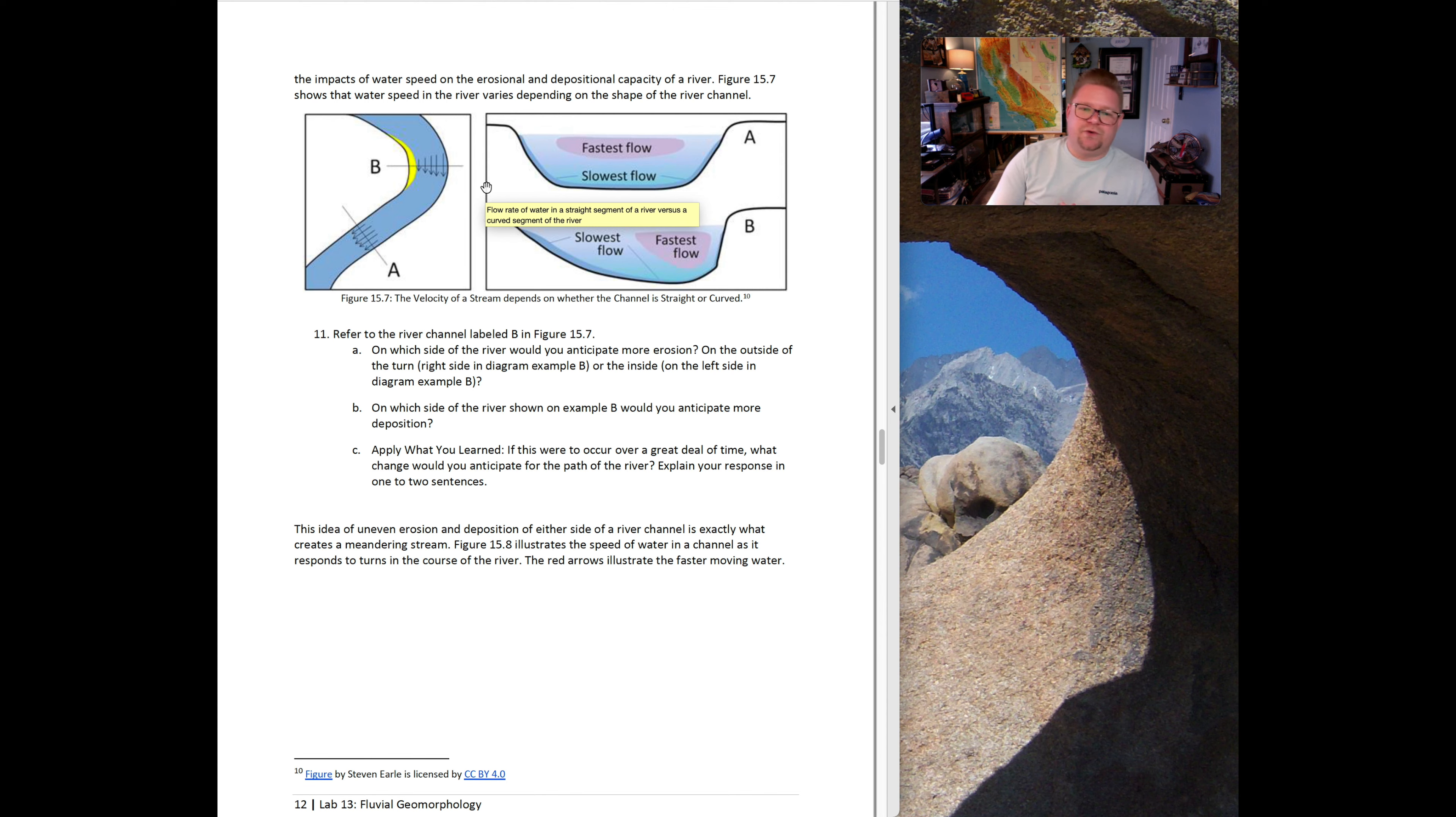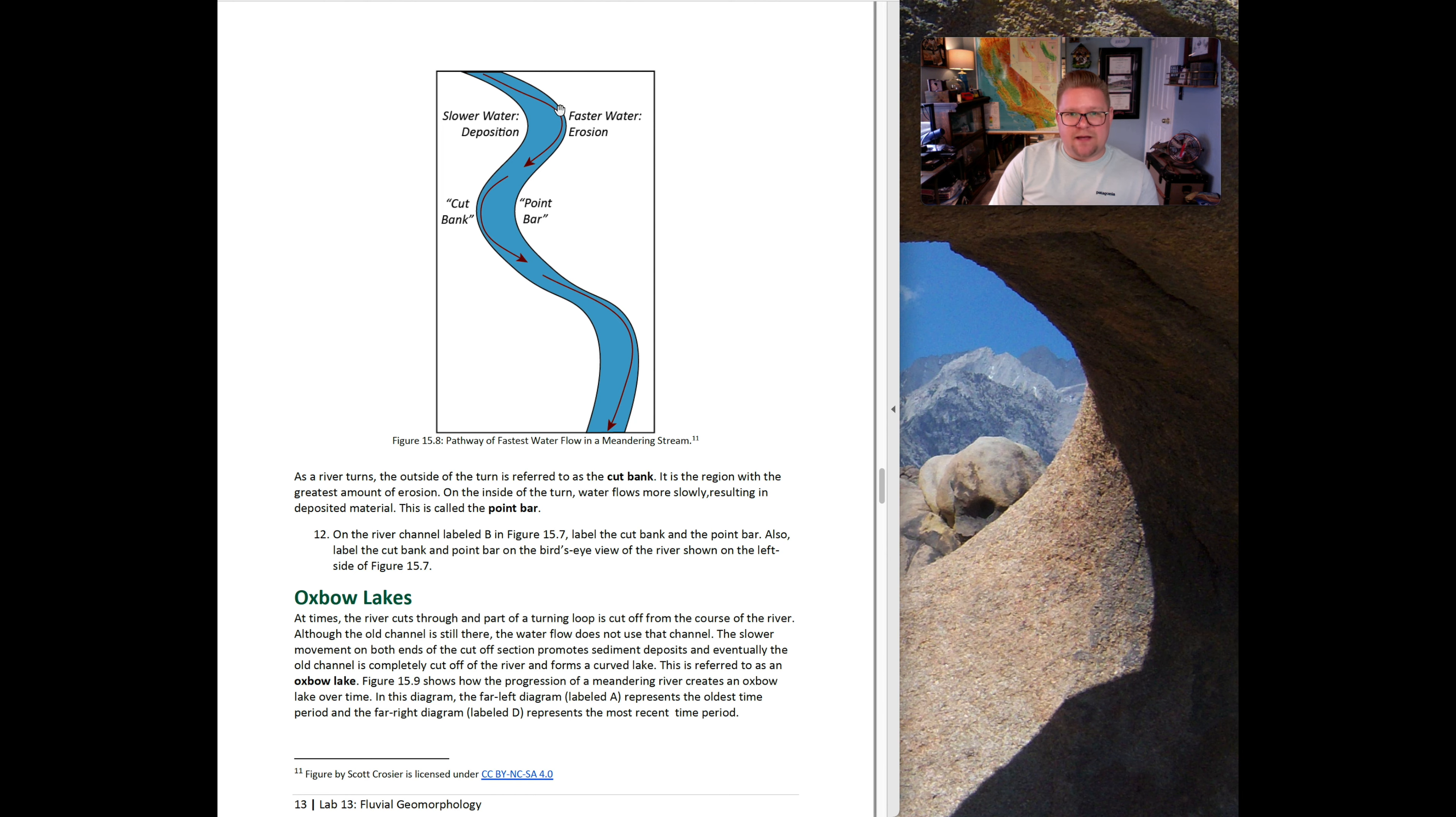The idea of uneven erosion and deposition on either side of a river channel is exactly what will create that meandering stream. Figure 15.8 below illustrates the speed of water in a channel as it responds to turns in the course of a river. As the river is flowing, it bounces back and forth. We see an area of erosion. This material is eroded and deposited here in a point bar. This cut bank, this area of erosion, is going to be pulling material here and depositing it here on this point bar. We're able to observe these different areas of erosion and deposition over time. They will continue to grow and grow out. What's interesting is that when looking at these curves in a stream, we always compare it to fractals, like a snowflake and how there's specific patterns and designs. Because of this ricocheting motion, there's a pattern and a distance. You can actually predict how far down the stream the next curve should be, which is pretty cool.